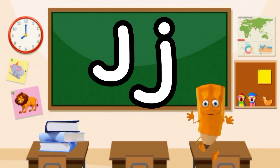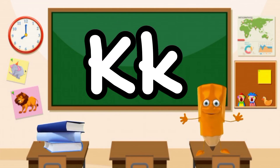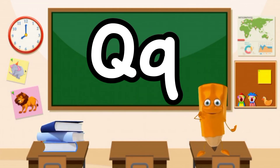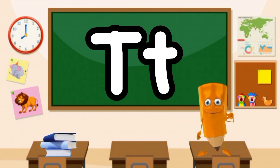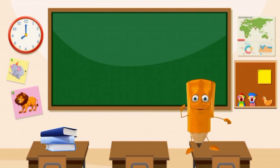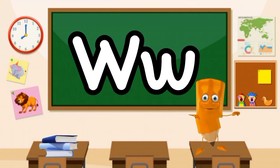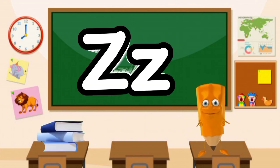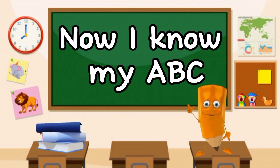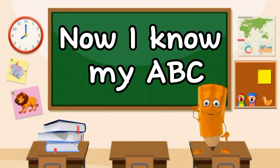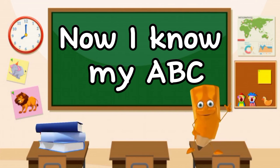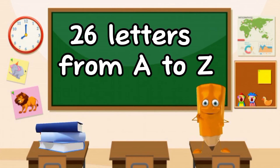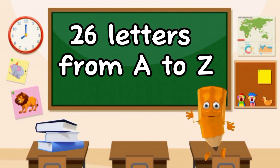H, I, J, K, L, M, N, O, P, Q, R, S, T, U, V, W, X, Y, and Z. Now I know my ABC, 26 letters from A to Z.